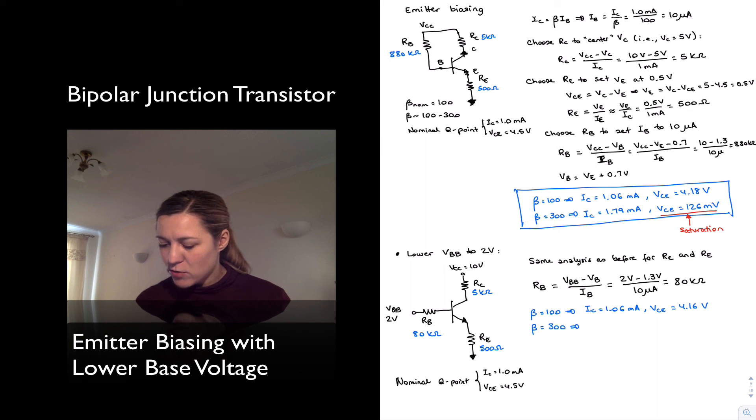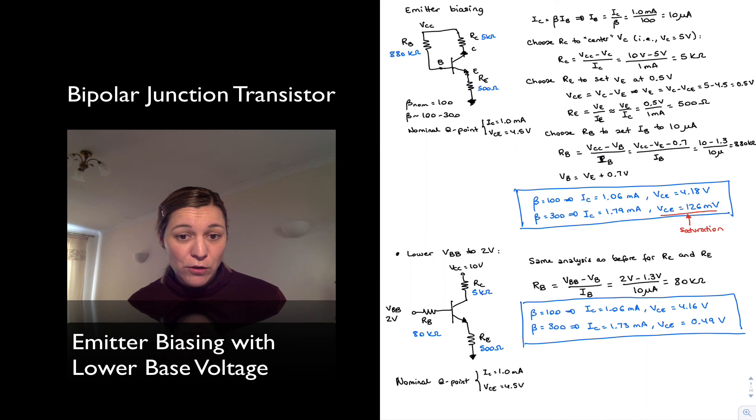Well, when beta equals 300, I have IC being equal to 1.73 milliamps, and Vce being equal to 0.49 volts. So not great, but an improvement. At least now I don't go into saturation, so my Vce is a little higher. Still nowhere close to the 4.5 volts that I wanted. And most importantly, there's a huge error or a huge difference with respect to the nominal beta of 100.